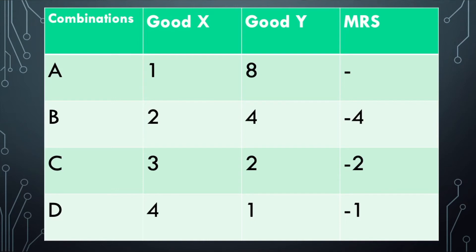delta Y or the quantity of good sacrificed to delta X or the quantity of the good obtained. So, at point B, the MRS will be delta Y divided by delta X, which is 4 minus 8 divided by 2 minus 1.